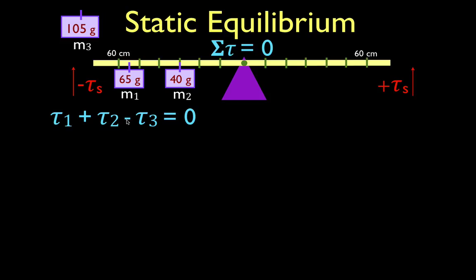I'm going to rearrange this equation so it looks like T1 plus T2 equals T3. The sum of the torque produced by T1 and T2 are going to be equal to the torque produced by T3 in order for this beam to be balanced.